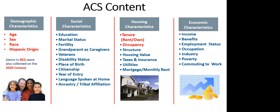The ACS covers demographic characteristics like age, sex, and race; social characteristics such as disability status, grandparent caregivers, and languages spoken at home; housing characteristics including home age, home value, owners versus renters; and economic characteristics such as income, occupations, industries, poverty, and commute times and methods.